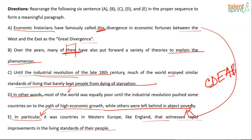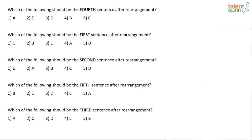Para jumble answers: The first statement is C, the second is D, the third is E, the fourth is A, and the fifth (last) statement is B. The answer to 'which is the fourth statement' is A, and the third statement is E.